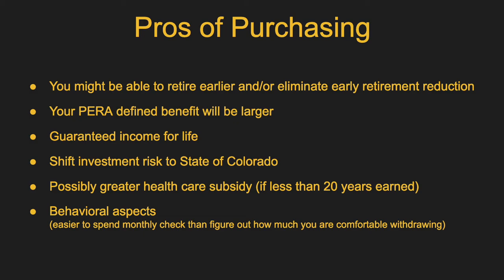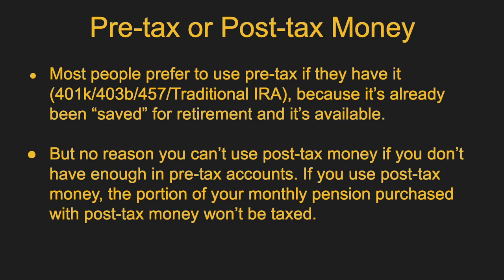That's why for the majority of people — though not everybody — purchasing credit makes more sense than keeping it in a 401k, IRA, or brokerage account. Most people prefer to use pre-tax money, particularly if already saved in a 401k, 403b, or traditional IRA. Note you cannot use Roth money for this, but any pre-tax money you can use because it's already saved for retirement. And as I said, investment returns have been great over the last few years. But keep in mind, you don't have to have that money there — you can use post-tax money from your savings, checking account, or taxable brokerage account. It can also be a combination of the two.